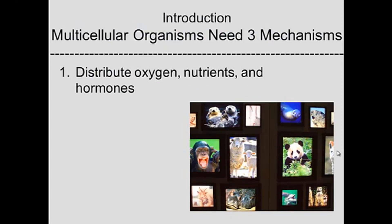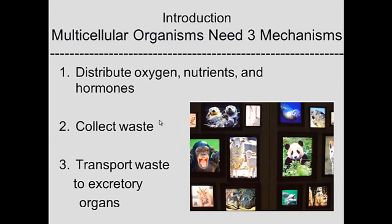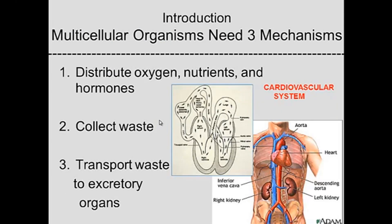Multicellular animals require three mechanisms. One is to distribute oxygen, nutrients, and hormones. Two is to collect waste. And three is to transport that waste to excretory organs. These three things are required and that's done by the cardiovascular system.